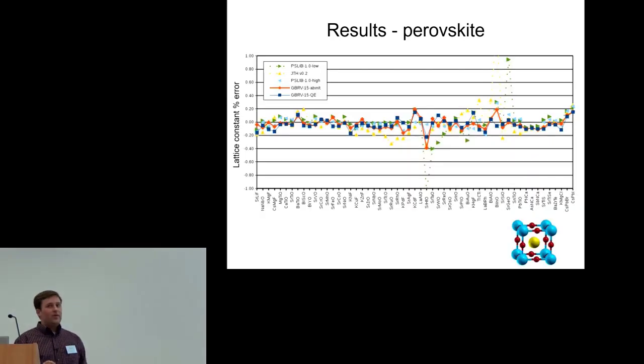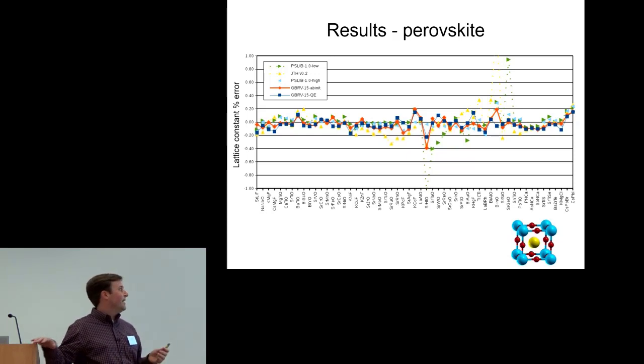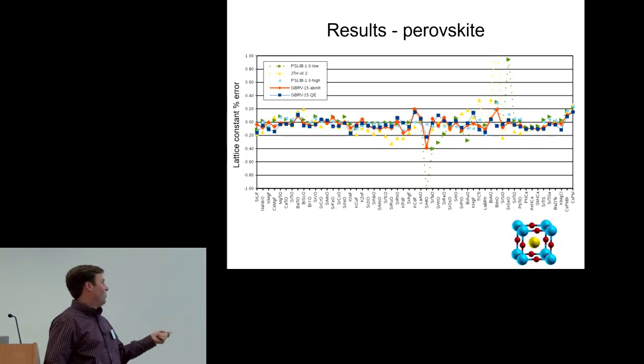If we move on to testing sets of different oxidation states, this is the percentage error for a bunch of perovskites I designed. In my testing, I stuck to chemically realistic oxidation states, so some examples of three plus, four plus ions, and most of the pseudo potentials agree for most of the compounds, but we do identify some problematic ones.